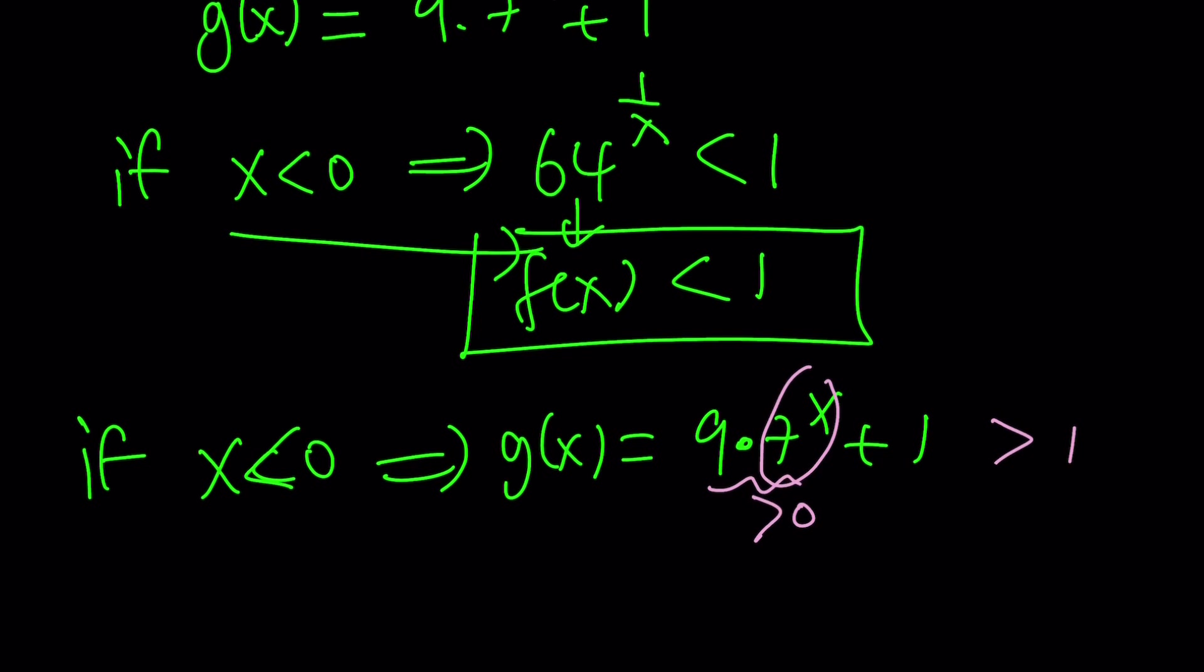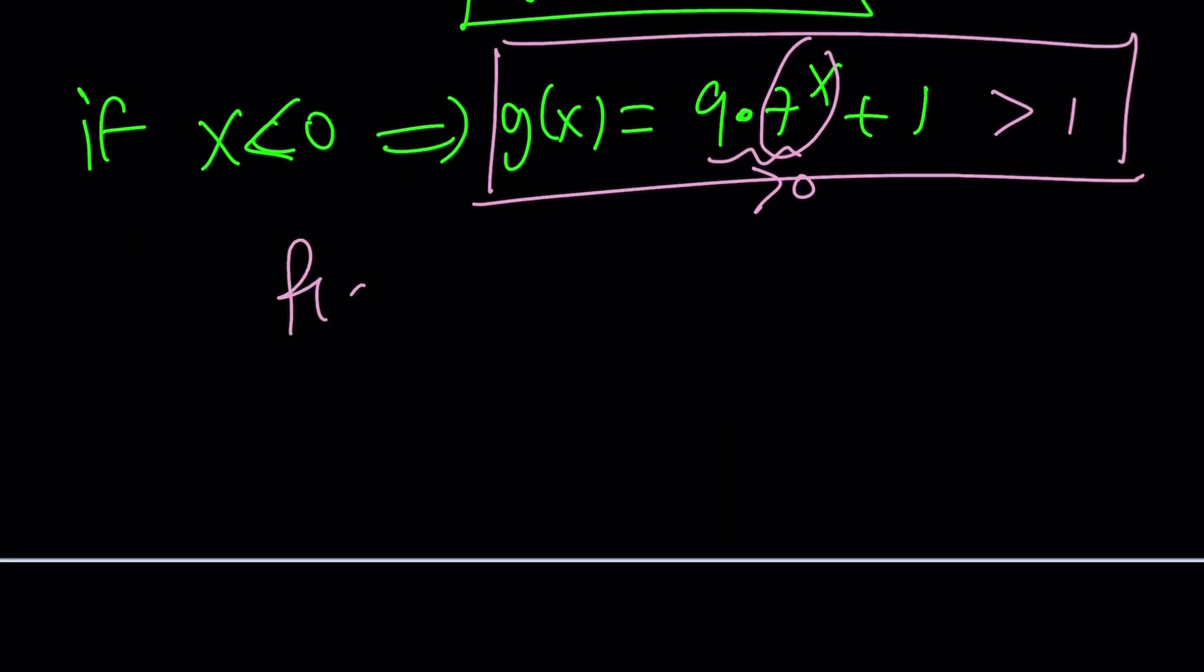Because we are trying to find a solution. But when x is negative, f of x is less than 1. g of x is greater than 1. There is no way they can be equal. Because we're trying to solve this equation. f of x equals g of x. But x is less than 0 gives us no solutions. Does that mean there's a solution for positive x values? We don't know yet. We're going to check it out.